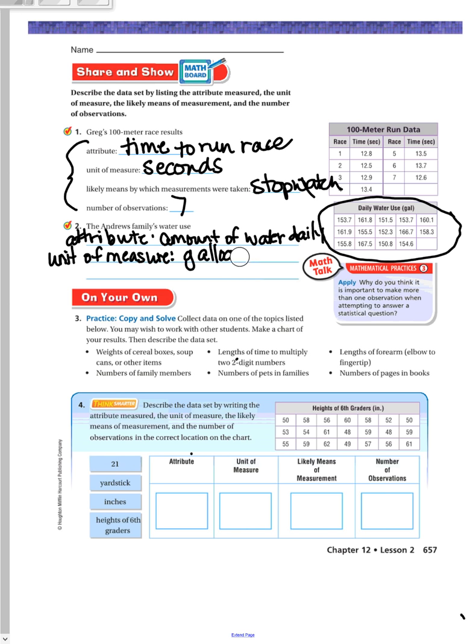Then we're going to look at the likely means of measurement. So if you don't live in town, they look at your water meter to see how much water your family has used. And then number of times that they observed. And this table doesn't say, so you just have to count. One, two, three, four, five, six, seven, eight, nine, ten, eleven, twelve, thirteen, fourteen. So times is 14.